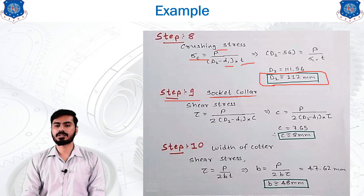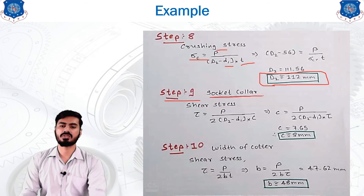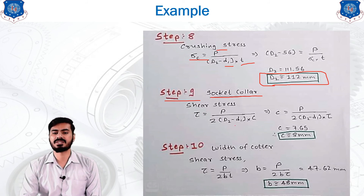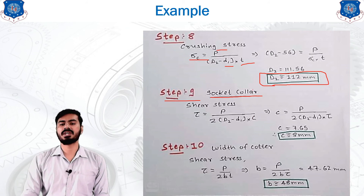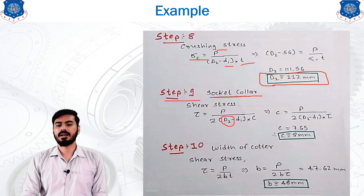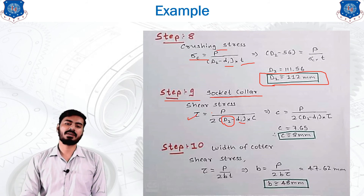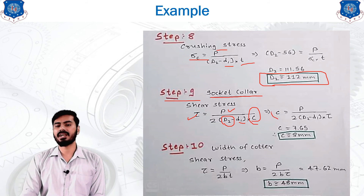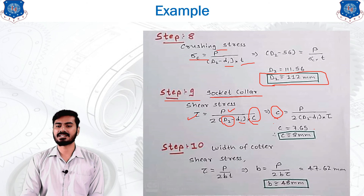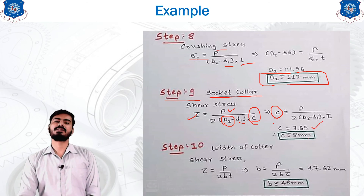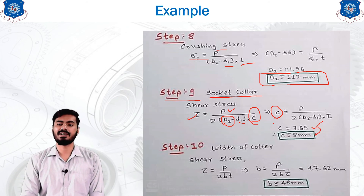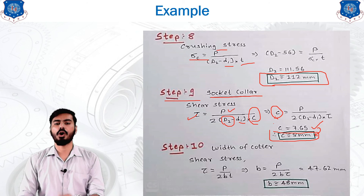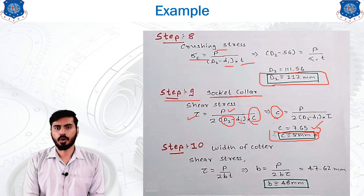Step 9 is the socket collar end, designed using the shear stress equation: τ = P / (2 · (d2 − d1) · c). We just calculated d2 in Step 8, and d1 is known from previous steps; τ and P are given. Making c the subject gives c = 7.65 mm, rounded to 8 mm. This is the distance from the slot to the socket end.